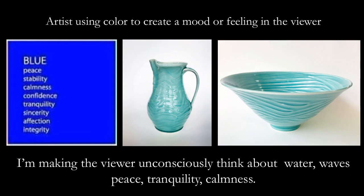I'll talk a little bit about my own work. Artists use color to create a mood or a feeling in the viewer. I'm making the viewer unconsciously think about water and waves, peace, tranquility, and calmness. When I wanted to make this particular body of work, I called it the Aqua Series — I wanted it to remind people of water. So I used a turquoise or blue color, and put waves in the work to give that reflection of water. I wanted my work to have a sense of calmness, tranquility, and peacefulness — not by coincidence that I chose these colors.